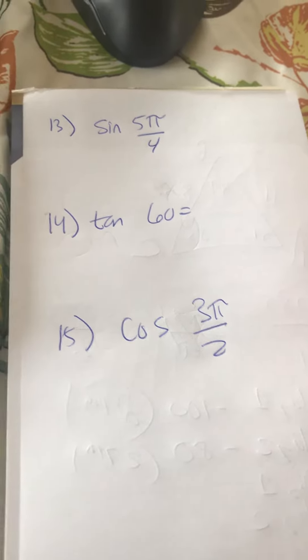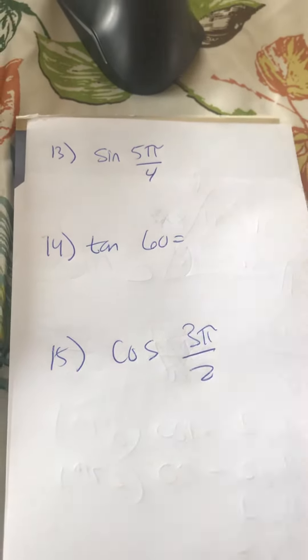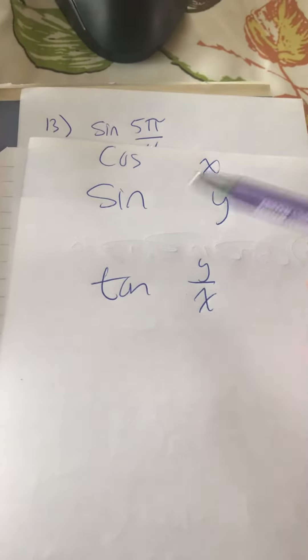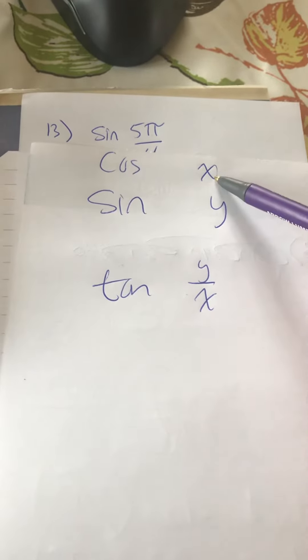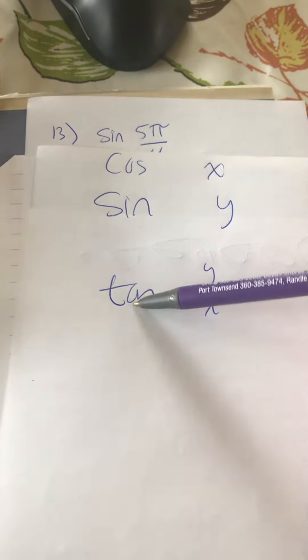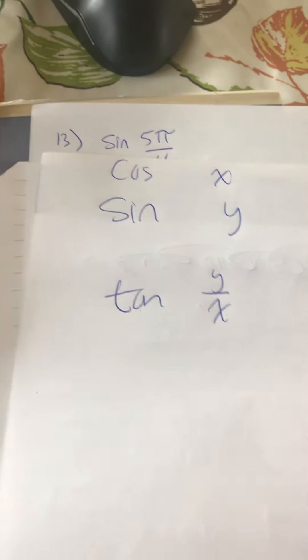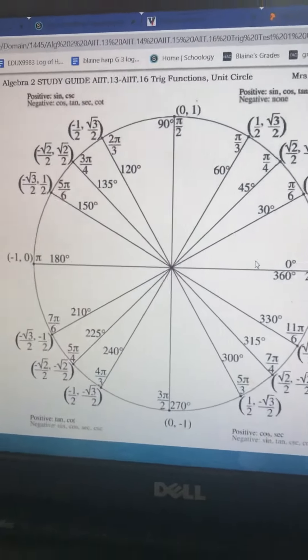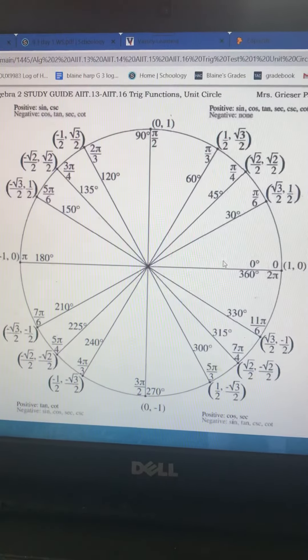For problems 13, 14, and 15, because you mentioned you were confused in that last section. One thing to keep in mind: if they're asking for cosine, they want the x value. If they're asking for sine, they want the y value. And if they're asking for tangent, they want the y over x value. Make sure you jot that down. You need a filled-in unit circle in front of you to do this.